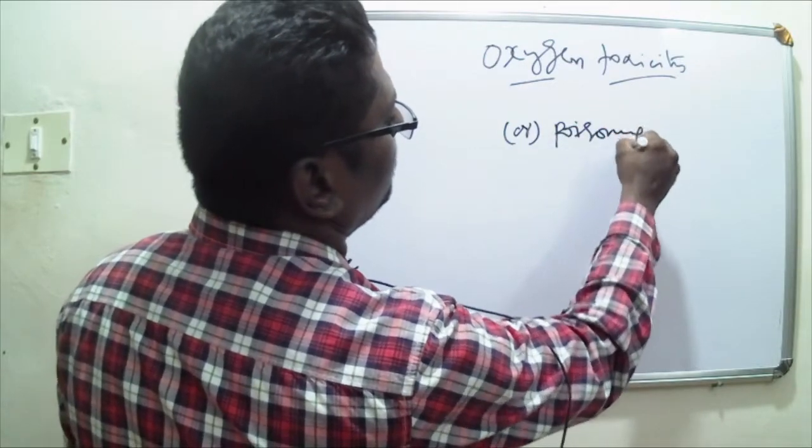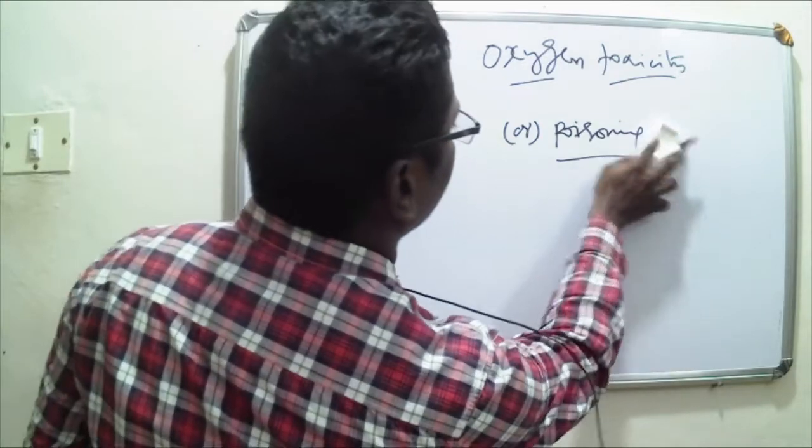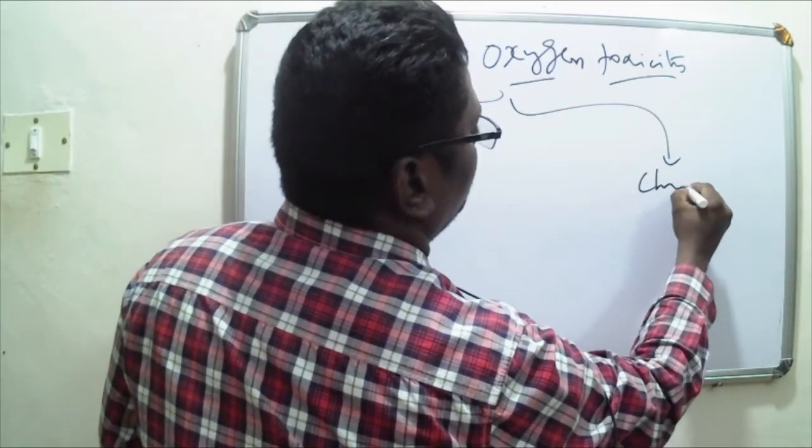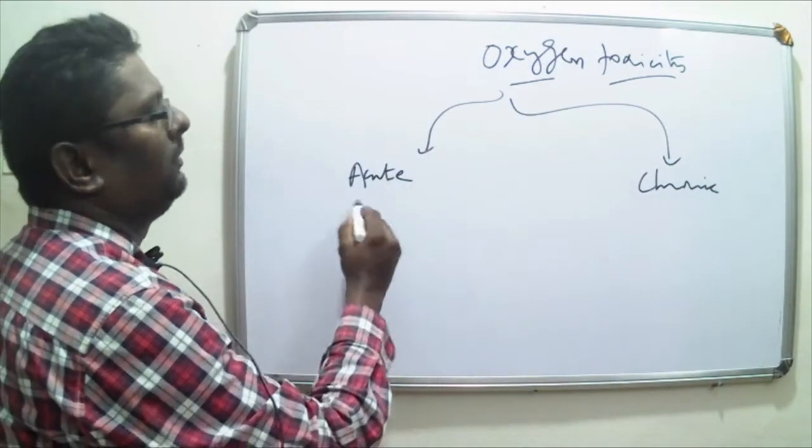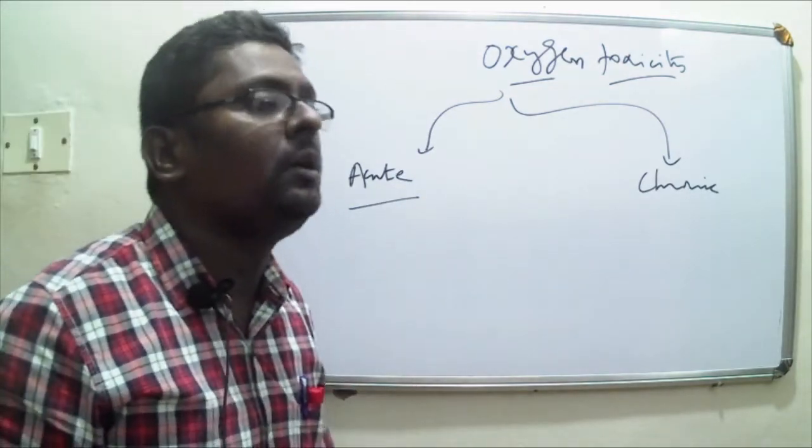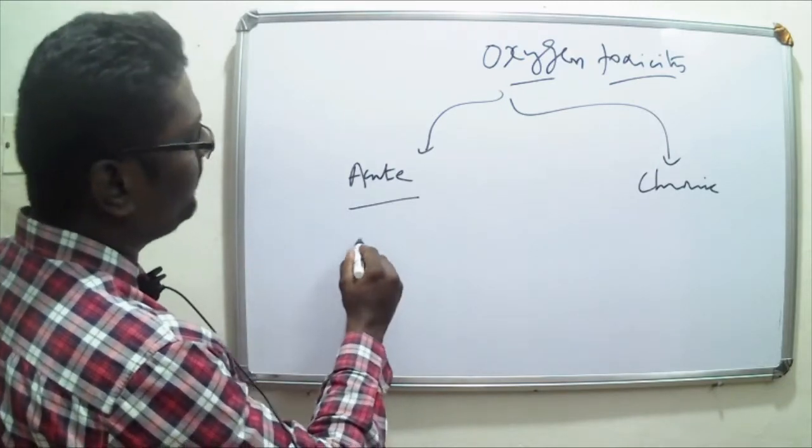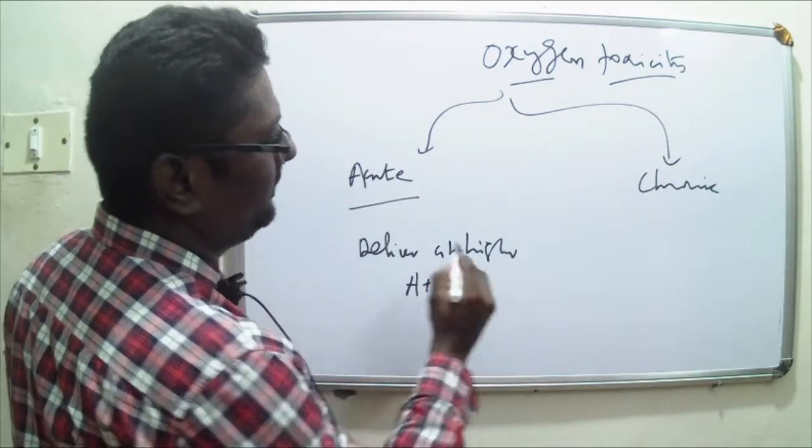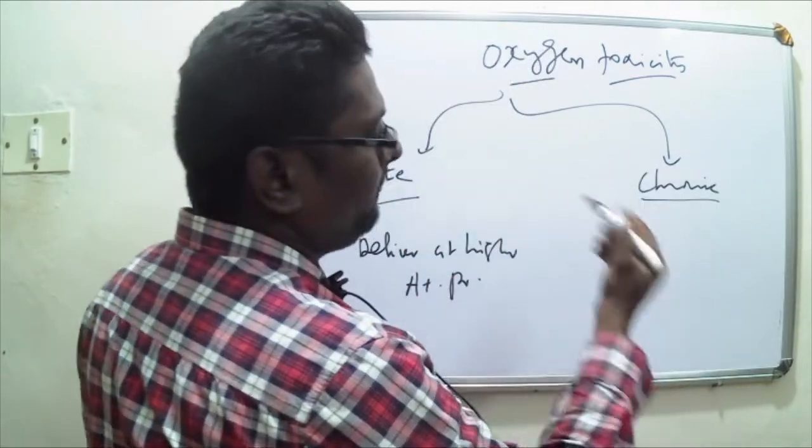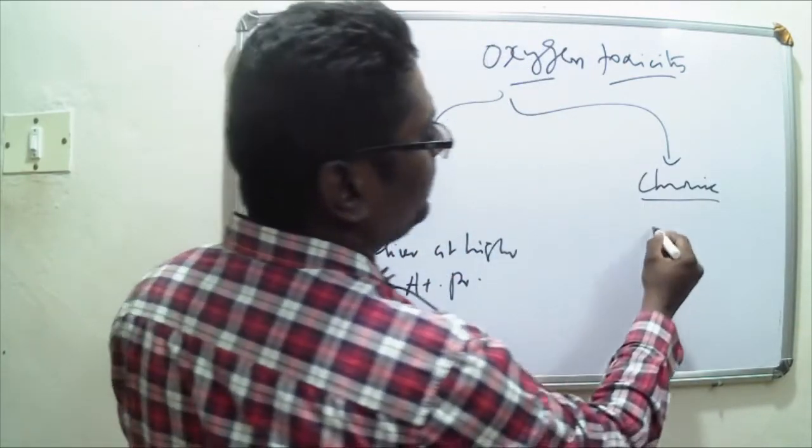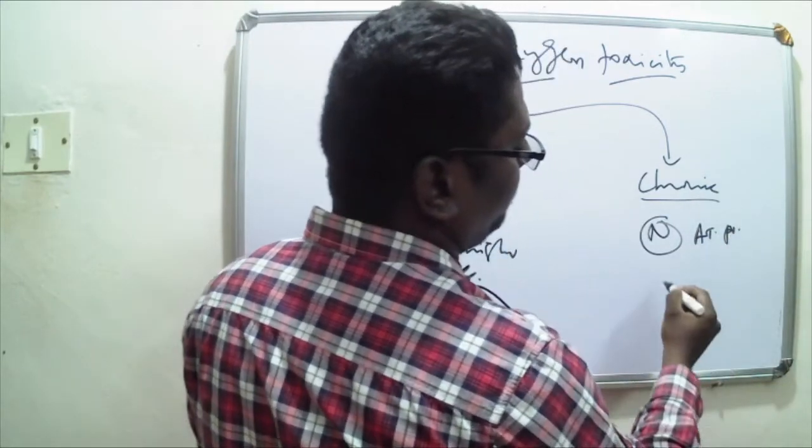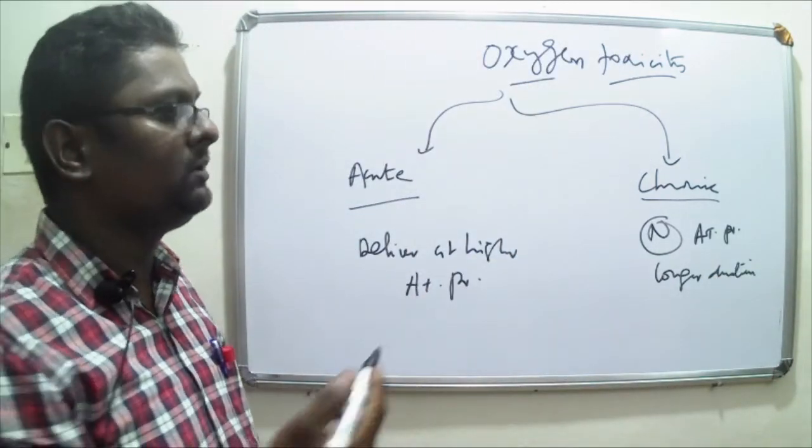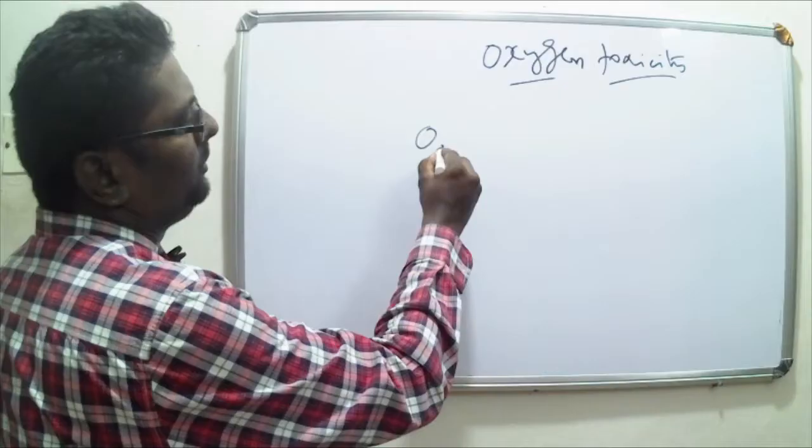It is also called oxygen poisoning. Now this oxygen toxicity could either be acute or it could be chronic. In acute oxygen toxicity, the cellular damage happens when we deliver oxygen at higher atmospheric pressures. In chronic oxygen toxicity, we deliver oxygen even at normal atmospheric pressures but for longer duration. In this case, the duration seems to be the problem.